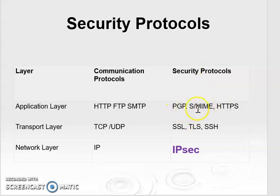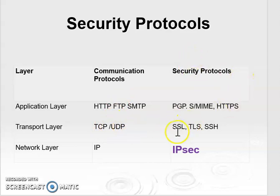Now PGP and SMIME are used for the email security. At the transport layer, the communication protocols are TCP, UDP and the security protocols are SSL, TLS and SSH.